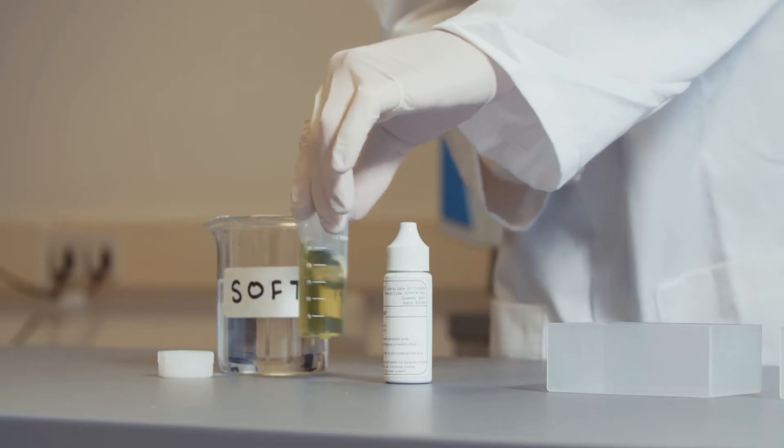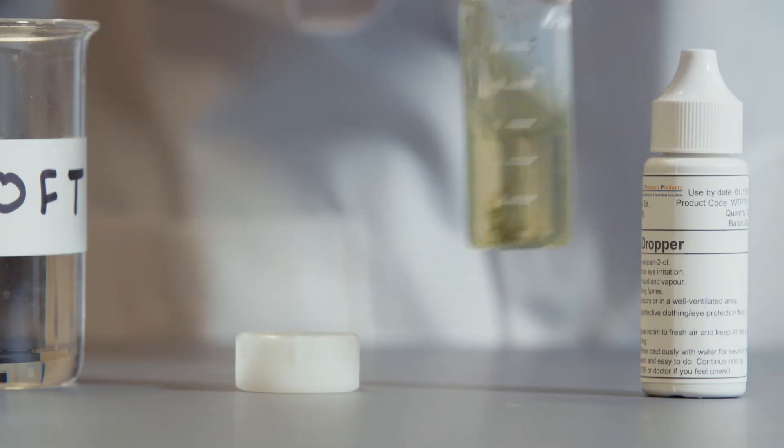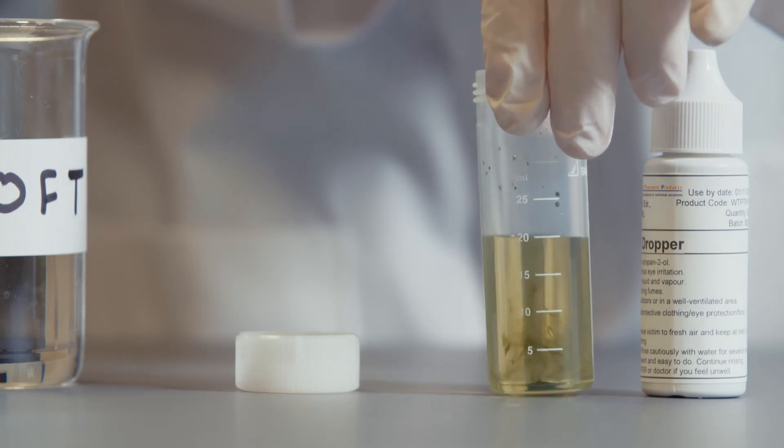Swirl the sample pot to mix the indicator thoroughly. A green color indicates the sample contains less than 10 ppm of hardness.